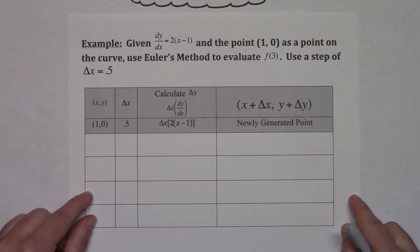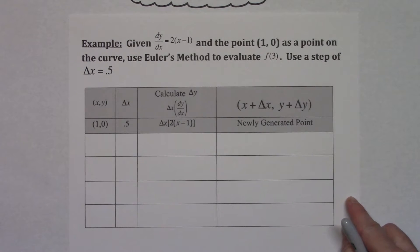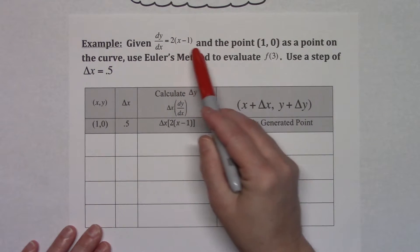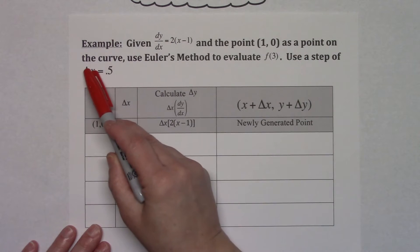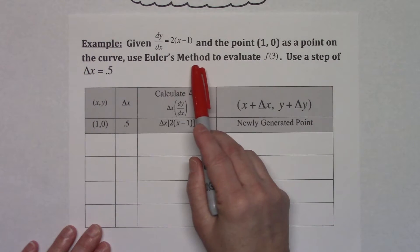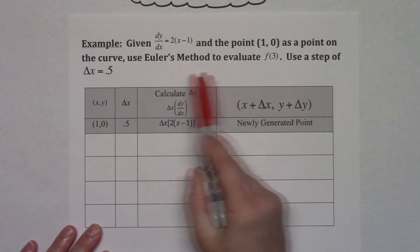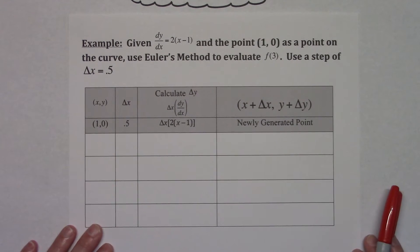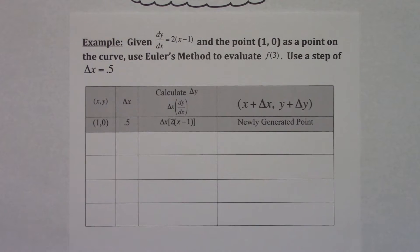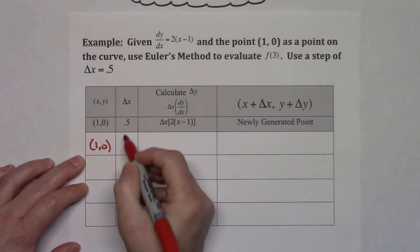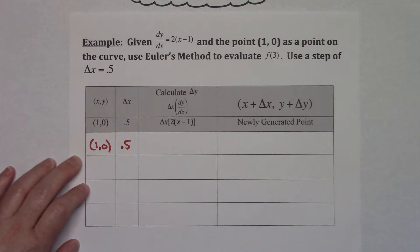For the second one, we'll actually do the math and work this one out. We're given dy/dx equal to 2 times the quantity (x minus 1), and (1, 0) as a point on the curve. We want to use Euler's method to evaluate f(3), and we're going to use a step of delta x equals 0.5 on this one. I've got my chart all set up here, starting with the point (1, 0), and my delta x is going to be 0.5 and that's not ever going to change.